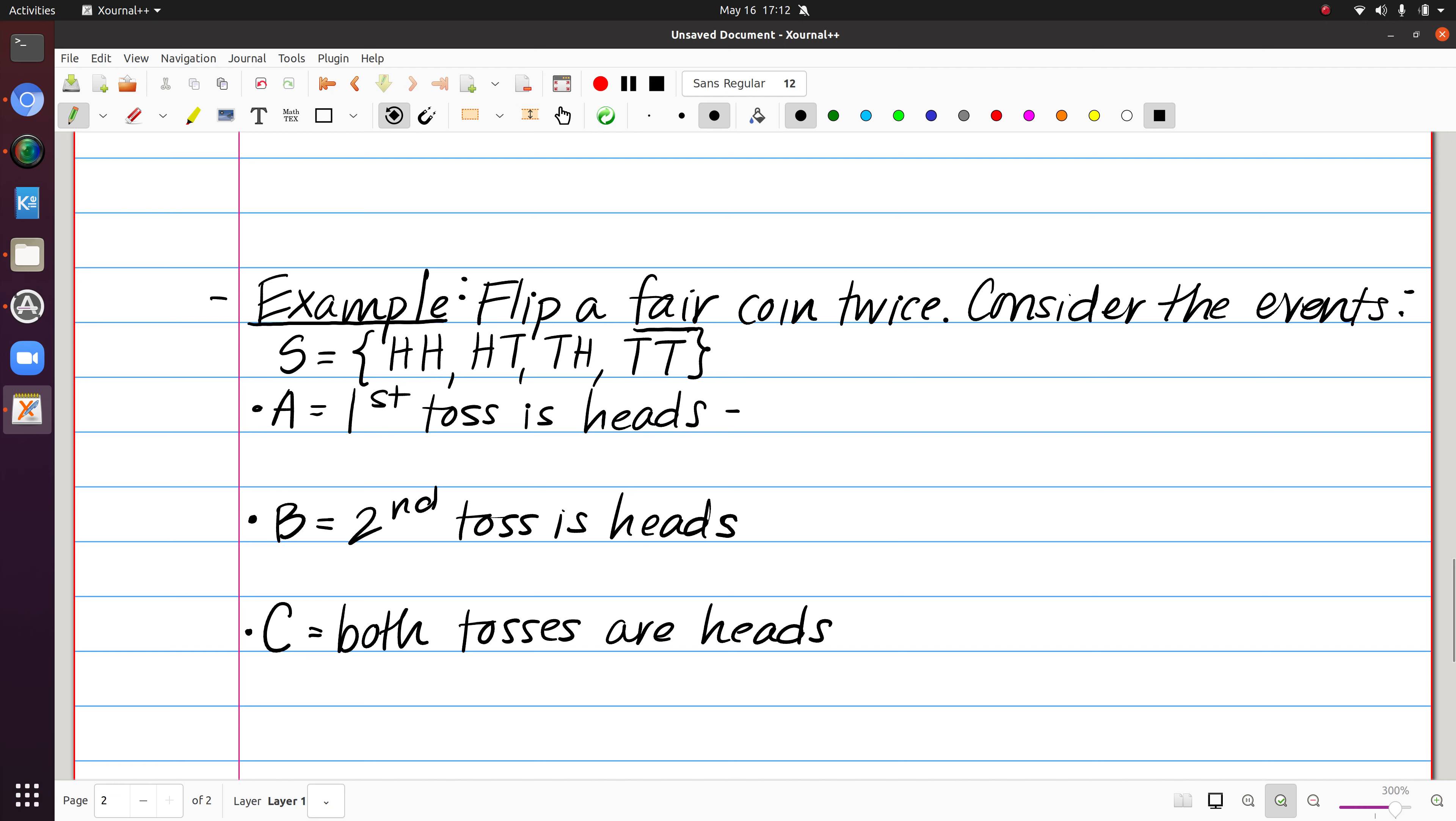Now that I've listed that, let's think about which outcomes correspond to each of my events. So A, if the first toss is heads, it's going to be heads, heads, or heads, tails. For event B, this would be heads, heads, tails, heads. And for event C, this would include just the one outcome, heads, heads. So by listing these out, right away I can find the corresponding probabilities. So the probability of A is one half. The probability of B is one half. And the probability of C is one fourth.